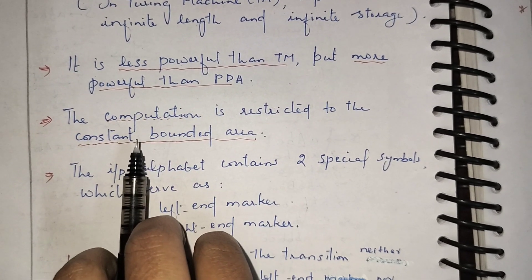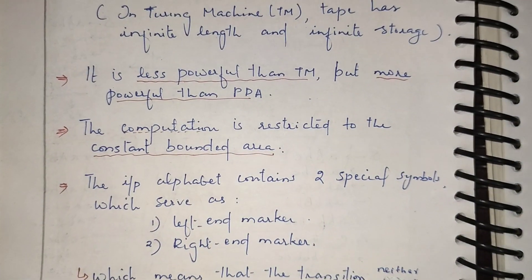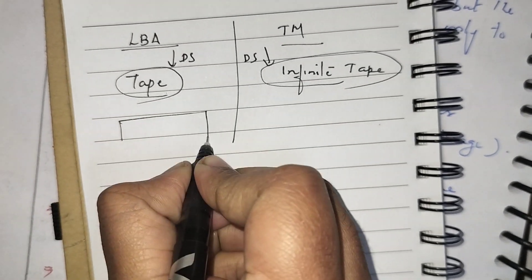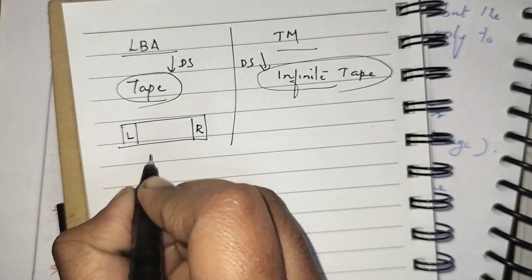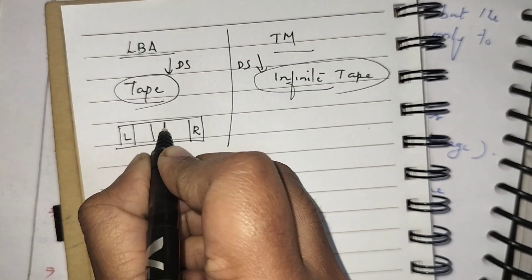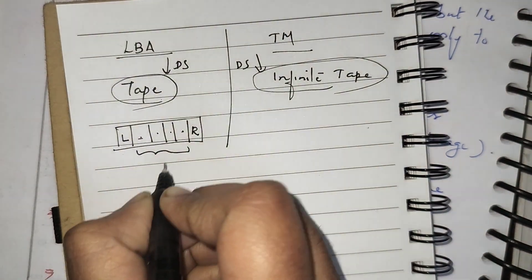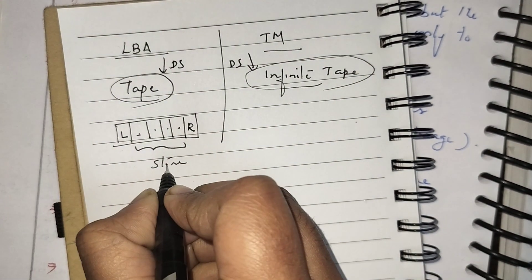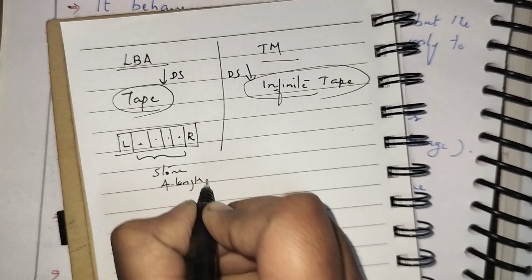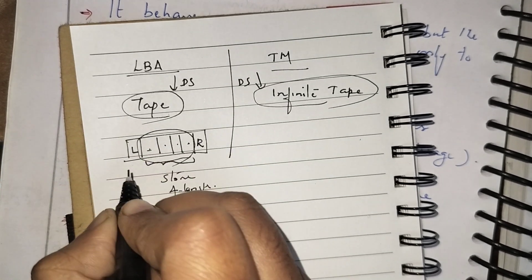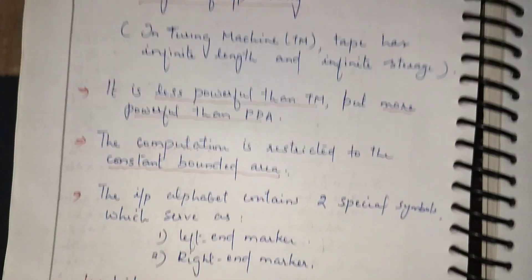The computation is restricted to a constant bounded area, and we are using two special symbols. We have a tape data structure with a left end marker on one side and a right end marker on the other. In between, you can see some area — for example, locations 1, 2, 3, 4 — this is the bounded area where only we can store the string. So we can store a four-length string here. The area is restricted, with left and right end markers.